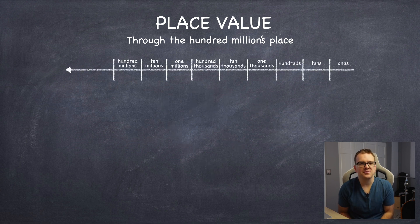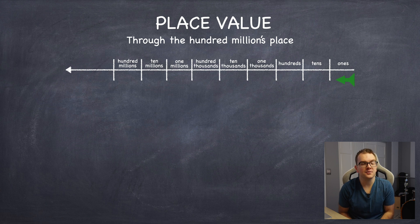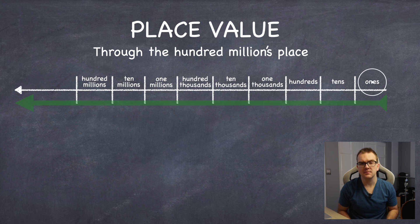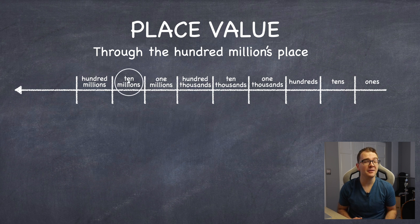Take a look at this place value chart. We'll work up to the hundred millions place. See each box in this chart? Going from right to left, we have ones, tens, hundreds, one thousands, ten thousands, hundred thousands, one millions, ten millions, and hundred millions.